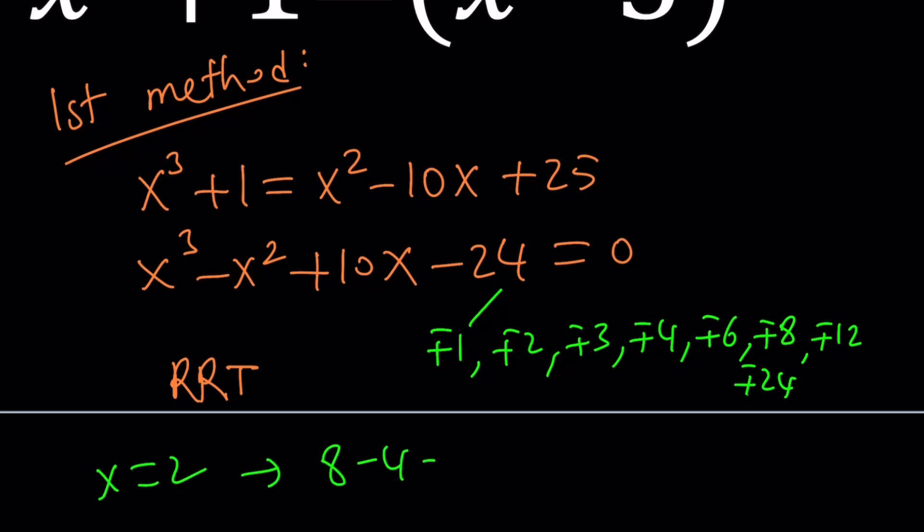We get 8 minus 4 plus 20 minus 24. Therefore, I get 8 plus 20, 28, minus 28, and that's equal to 0. Awesome.